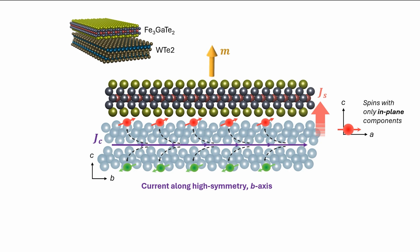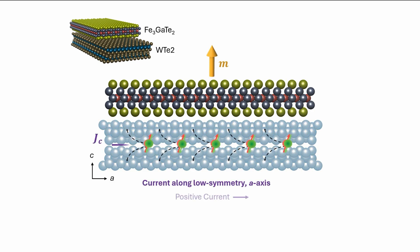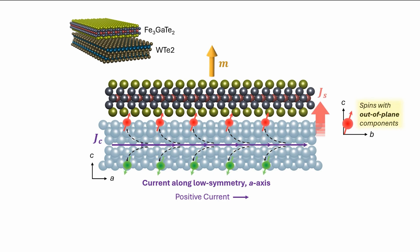However, if current is correctly applied along the low symmetry A-axis of WTE2, the spin current at the interface exhibits out-of-plane spin components, which can induce switching of the ferromagnet, even in the absence of external magnetic fields.